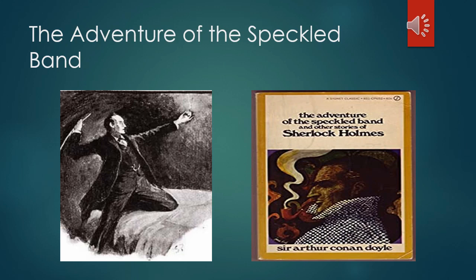Holmes listens carefully to Helen's story and agrees to take the case, planning to visit the manor later in the day. Before he can leave, he is visited by Dr. Roylott himself, who threatens him should he interfere. Undaunted, Holmes proceeds to the courthouse, where he examines Helen's late mother's will, and then to the countryside. At Stoke Moran, Holmes scrutinizes the premises inside and out. Among the strange features he discovers are a bed anchored to the floor, a bell cord that is not attached to any bell, and a ventilator hole between Helen's temporary room and that of Dr. Roylott. Holmes and Watson arrange to spend the night in Helen's room.